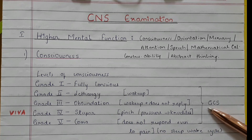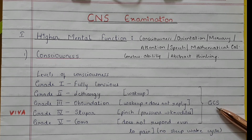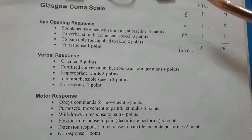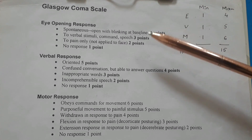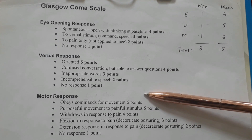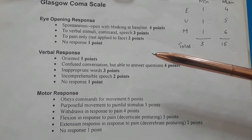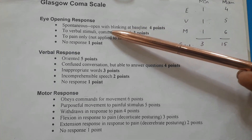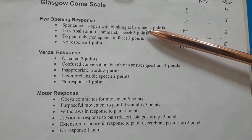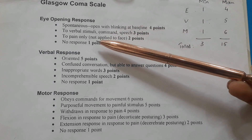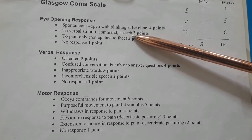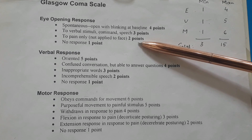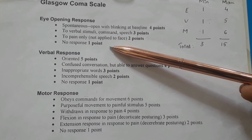The Glasgow Coma Scale assesses eye opening, verbal response, and motor response. Under eye opening response: spontaneous — opens with blinking at baseline — is 4 points; to verbal stimuli or command speech is 3 points; to pain only, not applied to face, is 2 points; no response is 1 point.